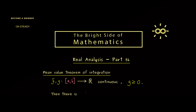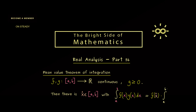The claim of the theorem is that we find an intermediate point x̂, and this one should fulfill something for the integral of f times g. We write the integral from a to b of f(x) times g(x), and this integral can be written as f(x̂) times the non-negative number given by the integral of g. So the claim is that we can pull the function f out of the integral by finding a suitable point x̂ — this represents a mean value.